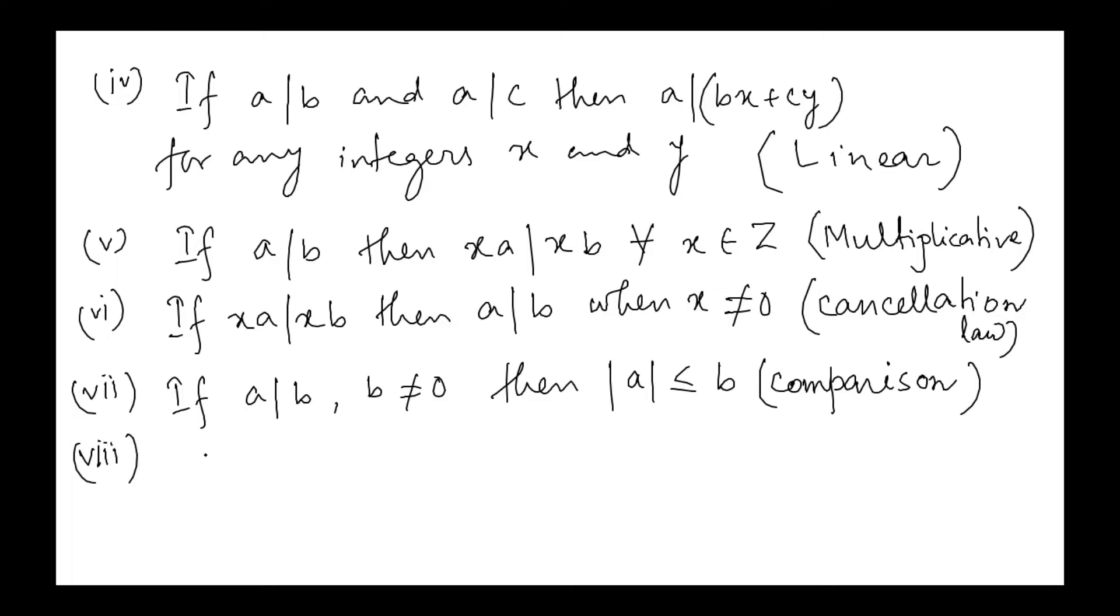Property 5: If a divides b and b divides a, then a = ±b. This is also called the comparison property.